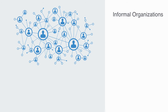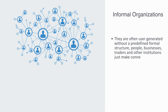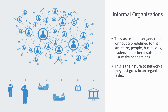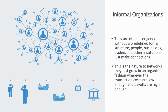Although this formal design may sometimes be the case with networks, such as corporate IT networks, networks are typically not like this — they are typically informal. They are often user-generated without a predefined formal structure. People, businesses, traders, and other institutions just make connections whenever the marginal benefit is greater than the marginal cost. If we give people mobile phones, they will start talking to their friends. If we reduce trade barriers, companies will start trading across borders. If financial institutions can invest in high-growth emerging markets with good returns, then they will create these financial connections. Networks just grow in an organic fashion whenever the transaction costs are low enough and the payoffs are high enough.